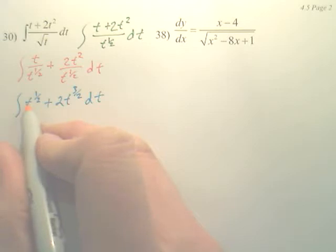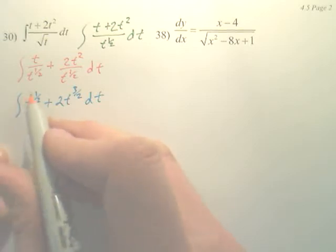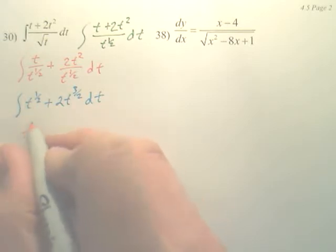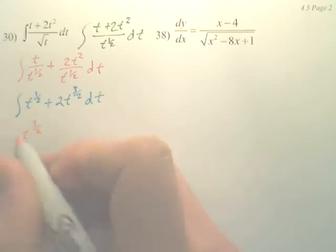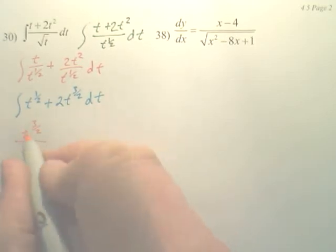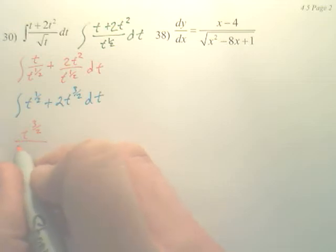To integrate this one, it's simply add 1 to that. You get t to the 3 over 2. And then instead of dividing by 3 over 2, can I flip it and multiply? So wouldn't that be 2 thirds?